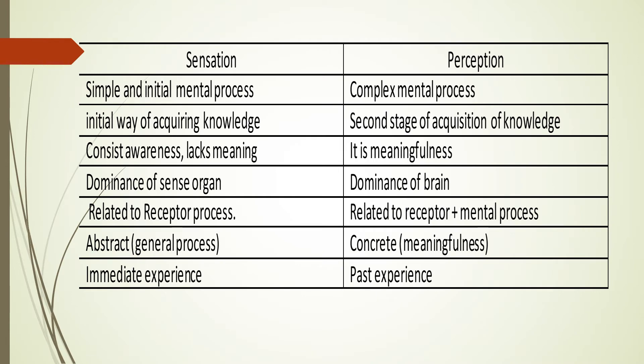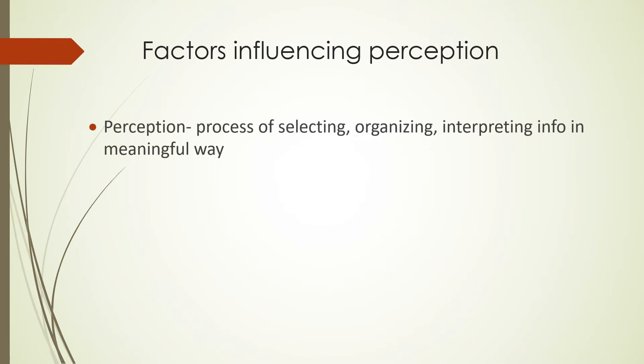There are certain differences between sensation and perception. Sensation is a simple and initial mental process — it is the initial way of acquiring knowledge, consists of awareness, lacks meaning, has dominance of sense organs, is related to the receptor process, is abstract, and is an immediate experience. Perception, on the other hand, is a complex mental process — it is the second stage of acquisition of knowledge, involves meaningfulness, has dominance of the brain, is related to both receptor and mental processes, and involves concrete meaningfulness and past experience.